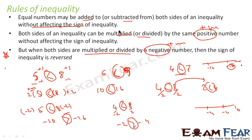To summarize the rules: if you add or subtract any number — positive or negative — from both sides, the sign doesn't change. If you multiply or divide by a positive number, the sign doesn't change. But if you multiply or divide by a negative number, the sign does change.